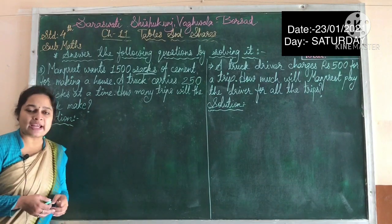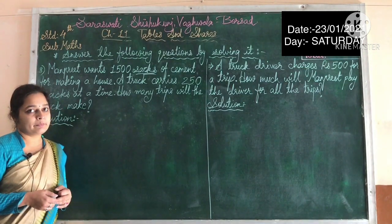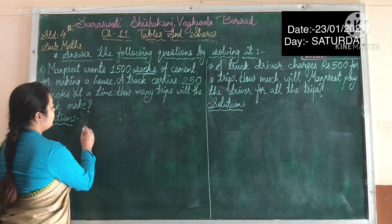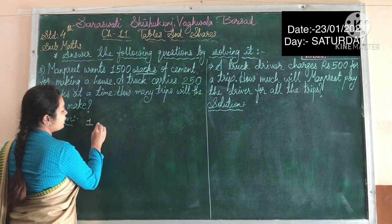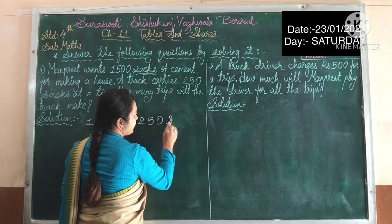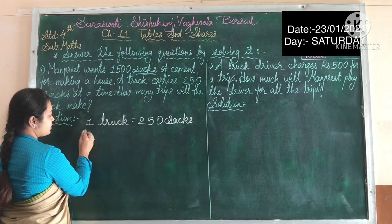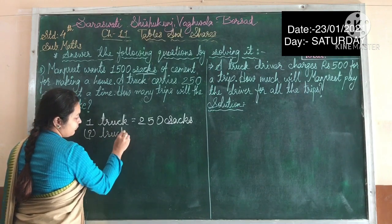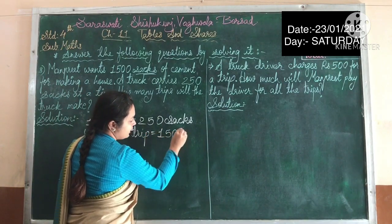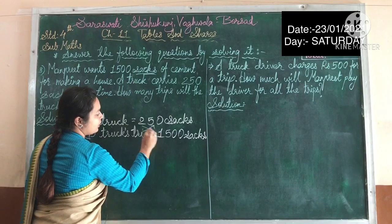So Manfred wants 1500 bags of cement to make a house, and a truck carries 250 big bags of cement at a time. So what do we have to do here? Let's write down: one truck equals 250 sacks. How many trips will there be? You can write 'trip' instead of 'truck' — question mark trips equal 1500 sacks of cement. Here you can see it is a cross multiplication, so therefore 1500 divided by 250.